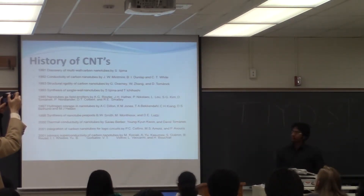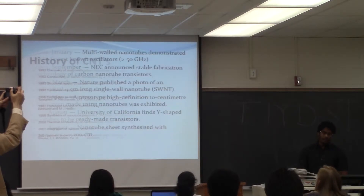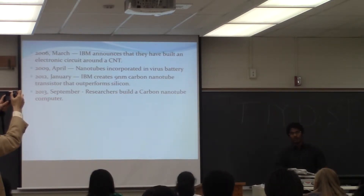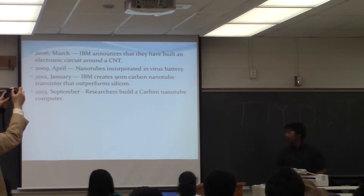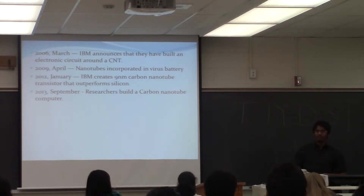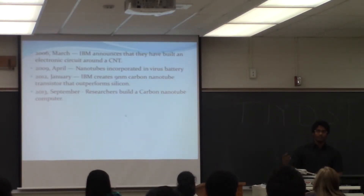Going back to the history of carbon nanotubes, they were first discovered in 1991. Year by year there has been development, and by 2013 the latest milestone was researchers building a carbon nanotube computer. This reminds me of the 2009 Olympics, where Phelps, the greatest swimmer of all time, wore a swimsuit with nanoparticles in it. The nanoparticles on the swimsuit repelled water so he could swim faster than his competitors. We also have sunscreen lotions with nanoparticles. There are some risks in nanotechnology, but there is also the risk of not developing it, since it is the future technology.